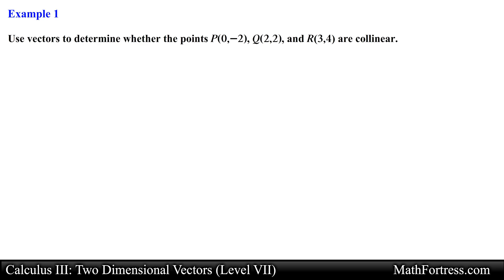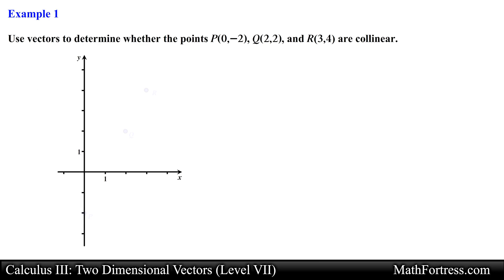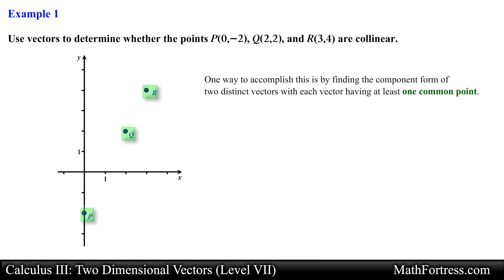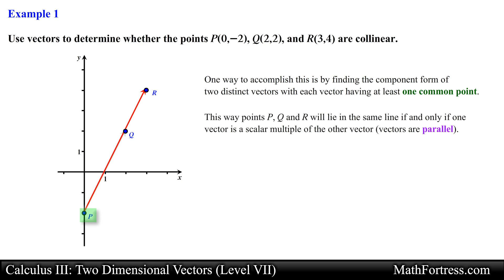Use vectors to determine whether the points P, Q, and R are collinear. Recall that we solved a similar problem by using the segment addition postulate from geometry. This time around we want to use vectors to show that these three points are collinear. One way to accomplish this is by finding the component form of two distinct vectors with each vector having at least one common point. Points P, Q, and R will lie in the same line if and only if one vector is a scalar multiple of the other vector, in other words if both vectors are parallel.